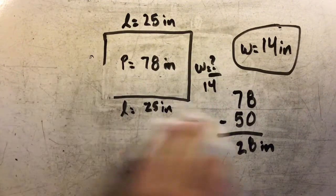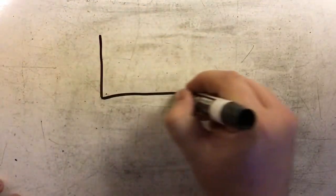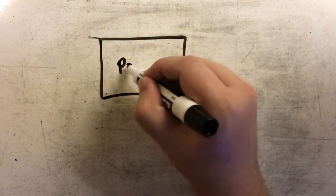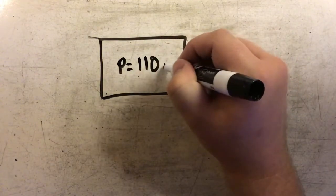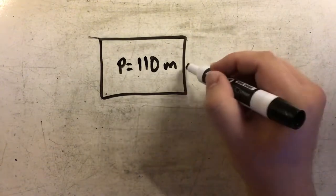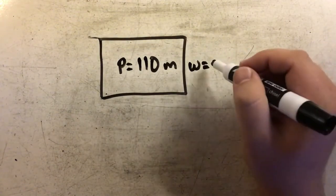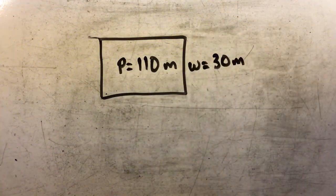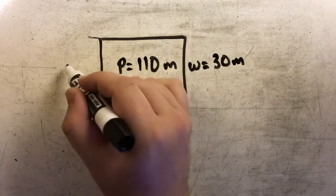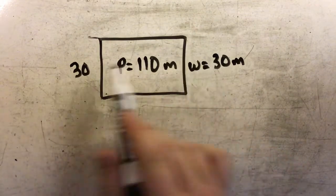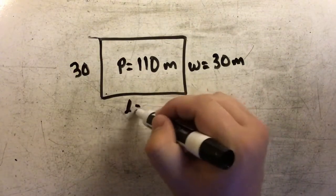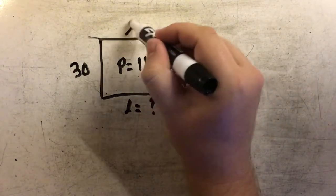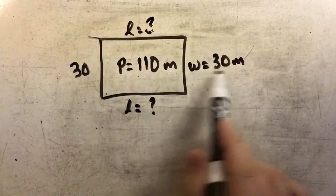Let's try another example. In this example we are given a perimeter of 110 meters and a side length of 30 meters. I know that if this side is 30 over here, this side also has to be 30 over here, so I'll go ahead and fill those in. What I don't know is my length on the other two sides, and that's what I'm going to try and find out.